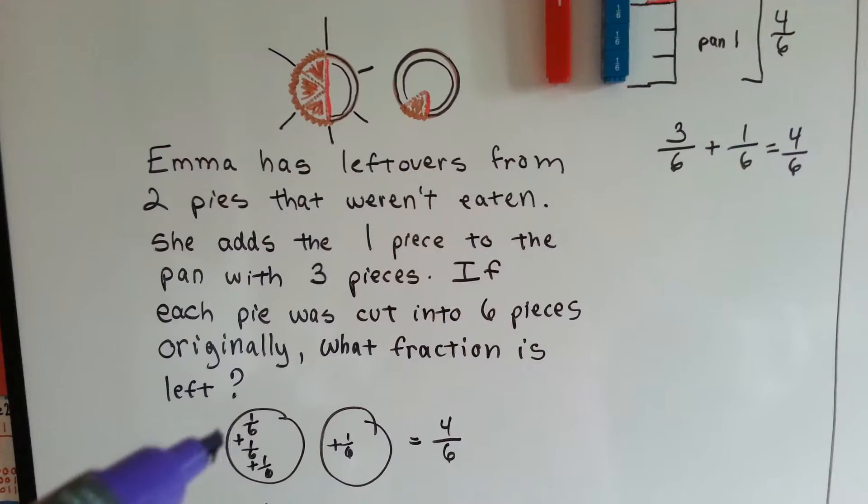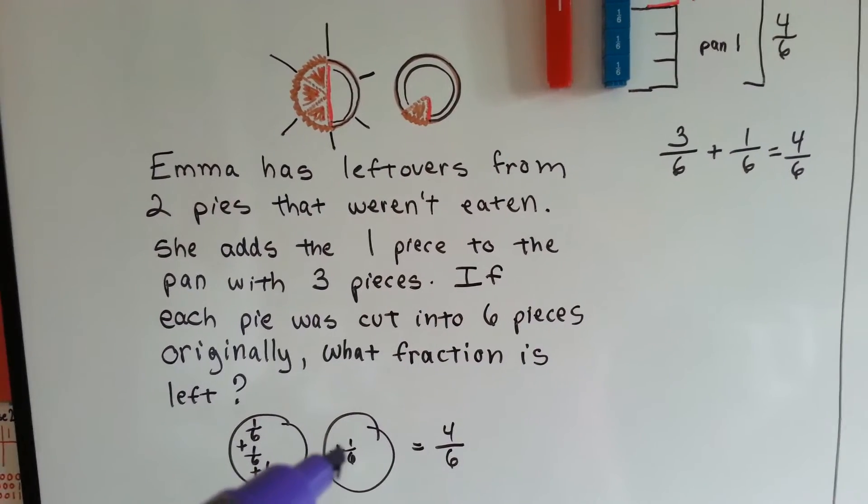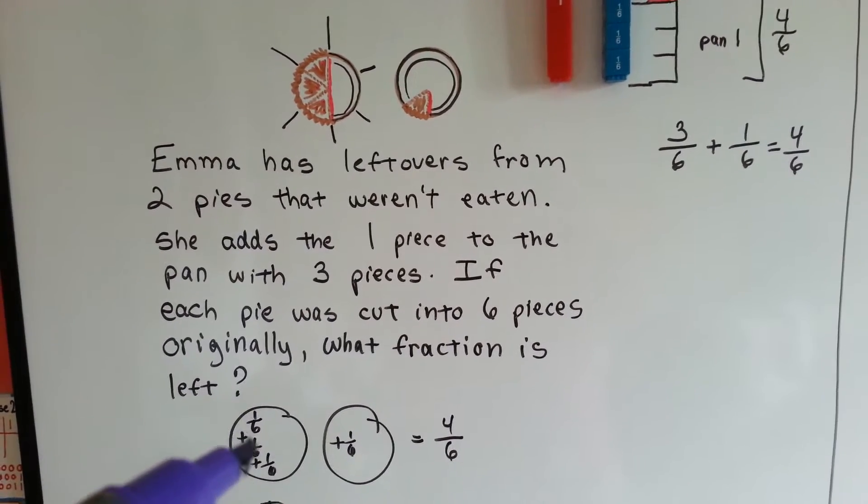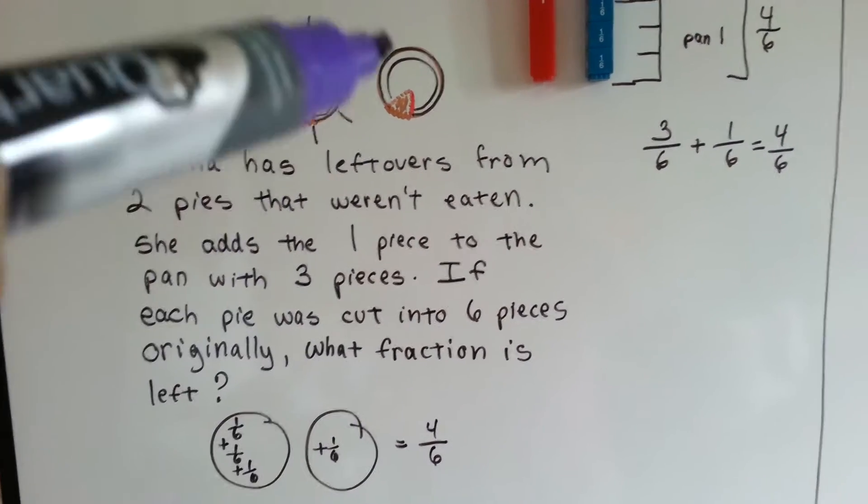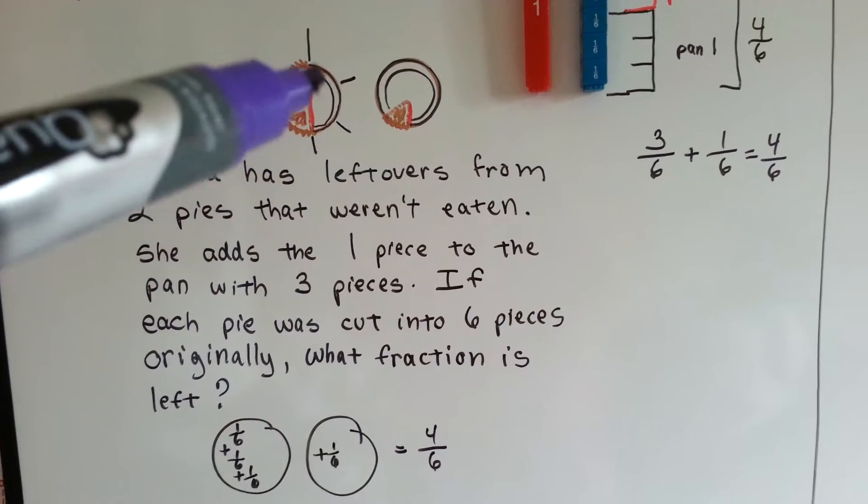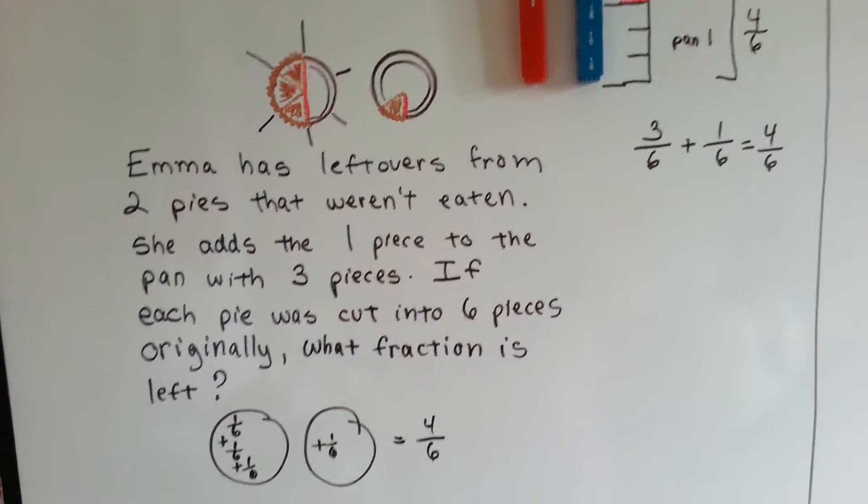1 sixth, 1 sixth, and 1 sixth, and then the 1 sixth from the second pan. You add up the ones, and she gets 4 sixths. See? If this one was in here, it would be 1, 2, 3, 4, 6.